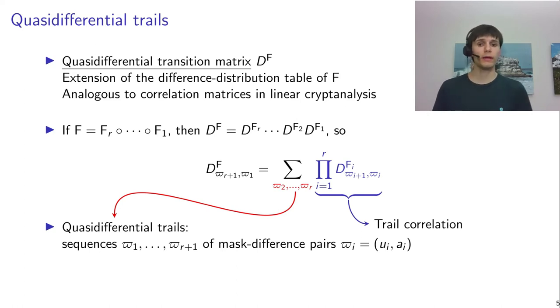The main property of this matrix is that if you have a composition of functions, then you can just multiply the quasi-differential transition matrices in order to obtain the quasi-differential transition matrix of your composite function.